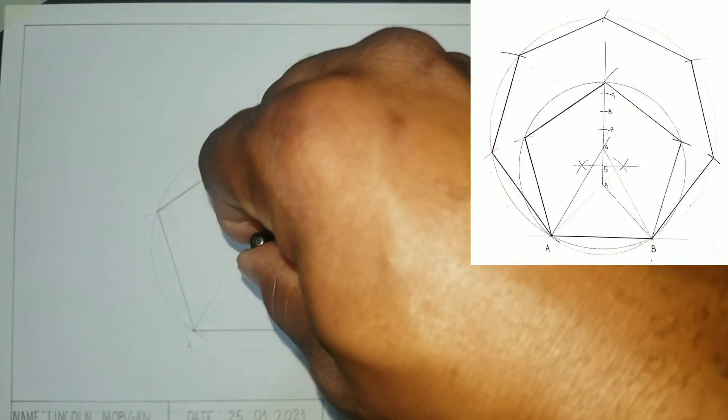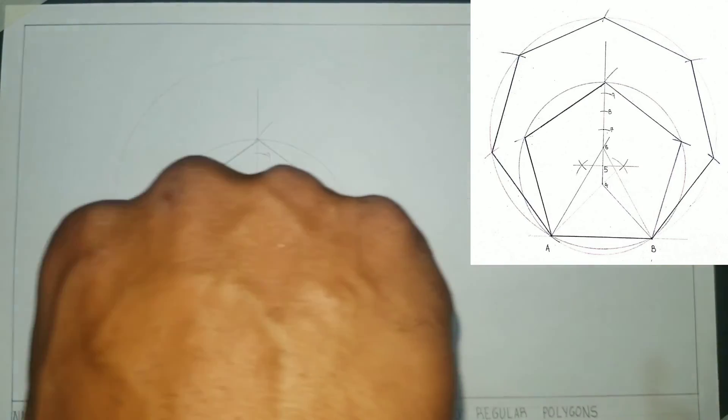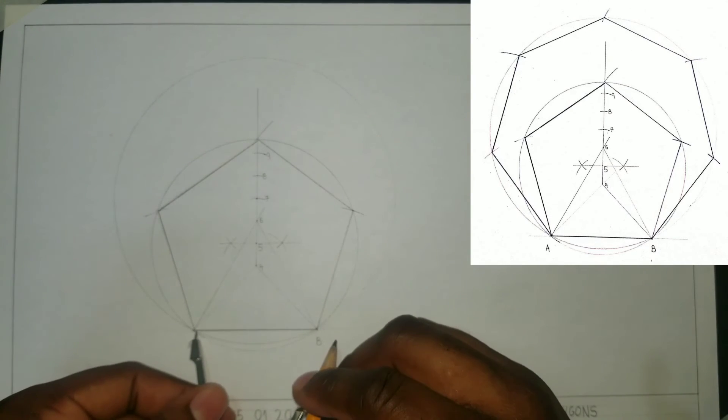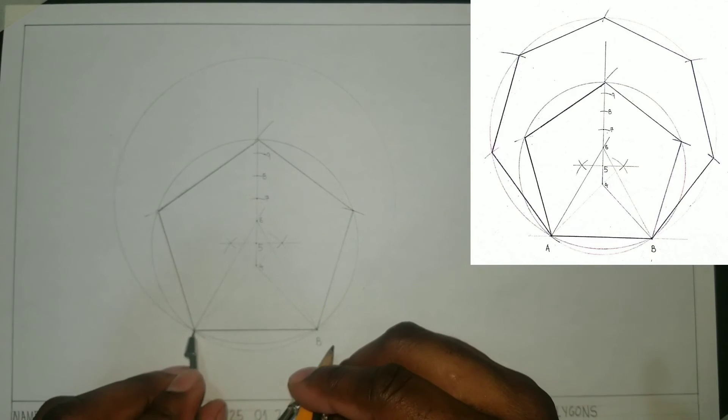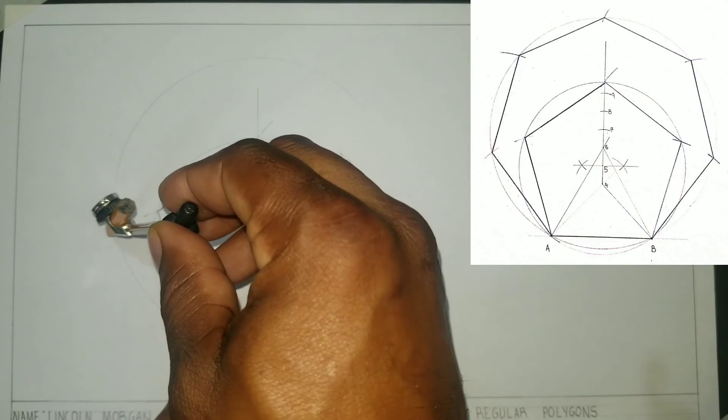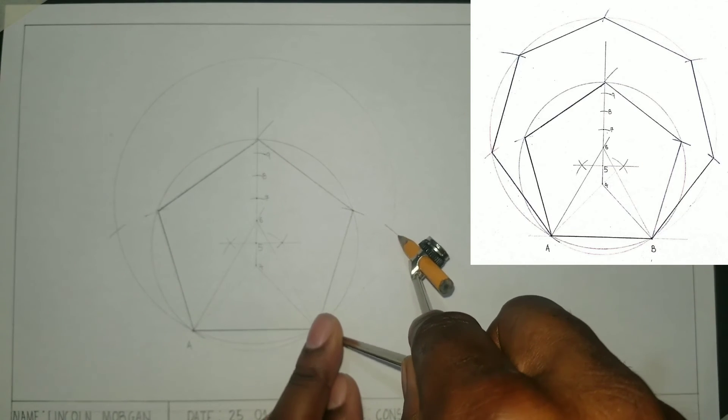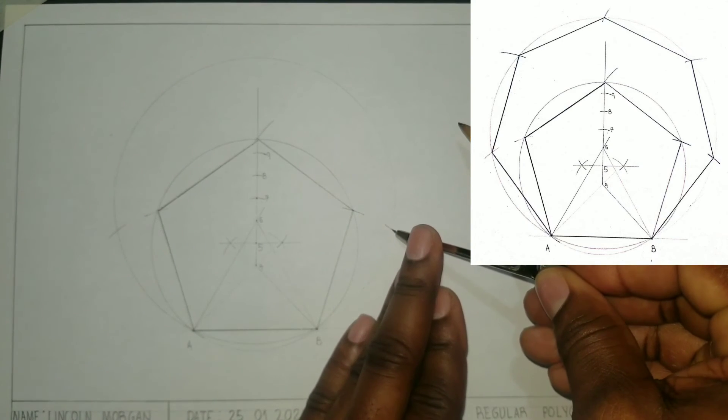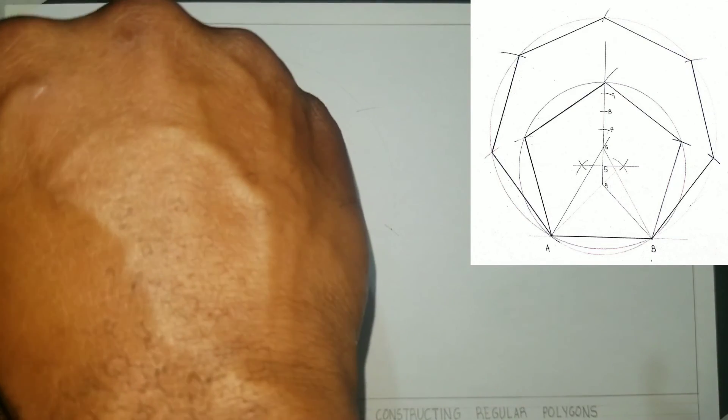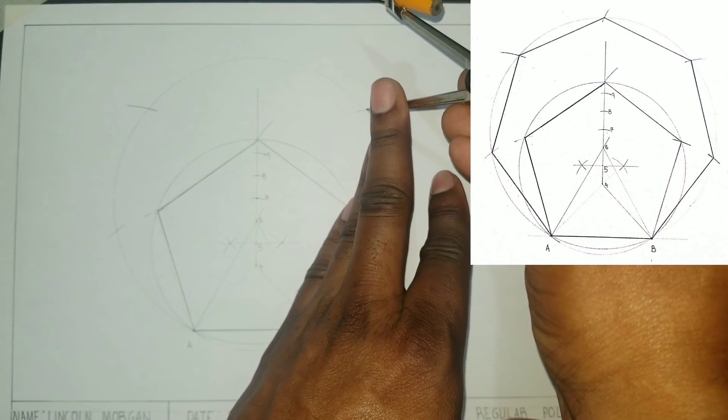From point 7 we will draw a circle. Now we will open our compass from A to B, which is 60 millimeters, and we will scribe arcs to cut our circle from A, from B, from this intersection, from this intersection, and finally from this intersection to cut our circle.